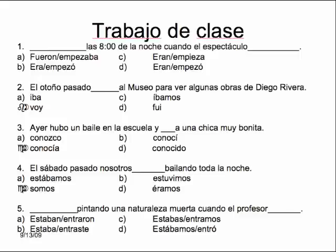Two more examples. 'El sábado pasado nosotros blank bailando toda la noche' — the answer is B, 'estuvimos bailando,' because we know exactly when the action took place: last Saturday. For number five: 'Blank pintando una naturaleza muerta cuando el profesor blank' — we were painting a still life when the professor entered. The answer is D — the ongoing action, everybody painting their still life, is the imperfect, while the action that interrupted it — the professor entering — is the preterite.